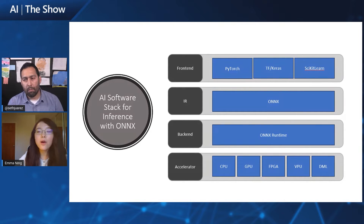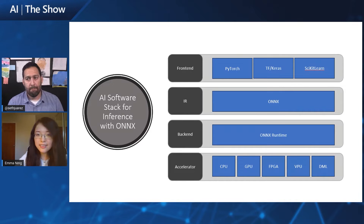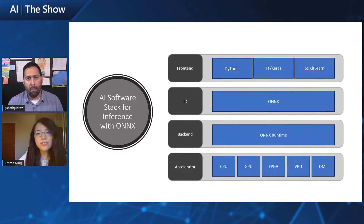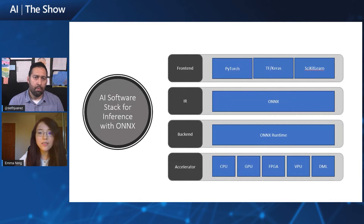ONNX stands for Open Neural Network Exchange. It's a standard format for representing both deep learning and traditional machine learning models. As a standard IR, it allows models trained on different frameworks to be converted to ONNX format. Then ONNX models can be inferenced with ONNX Runtime, which leverages a variety of hardware accelerators to get optimal performance for different hardware.